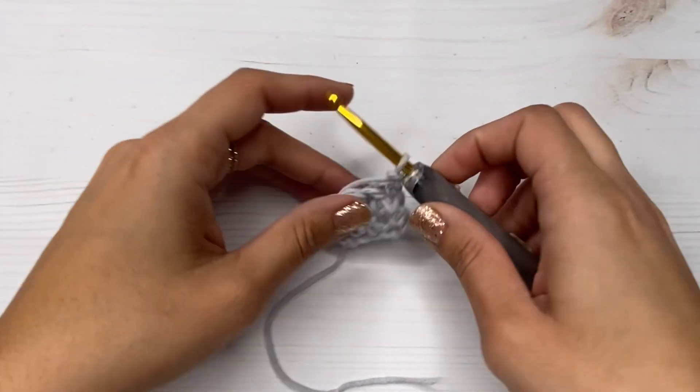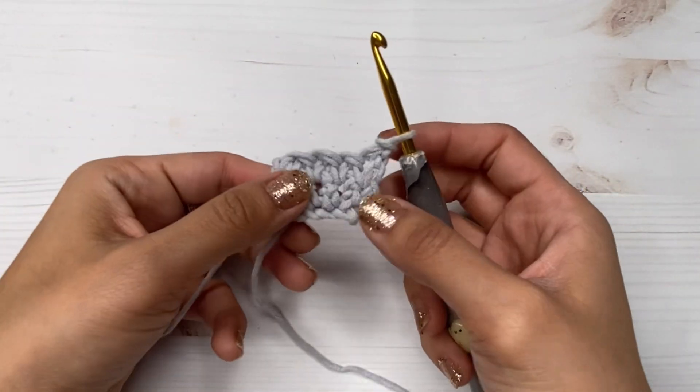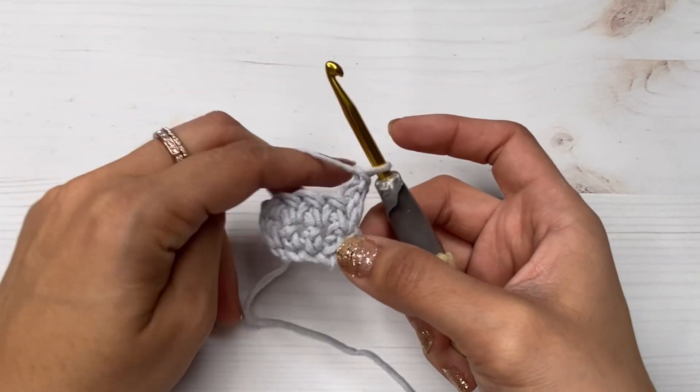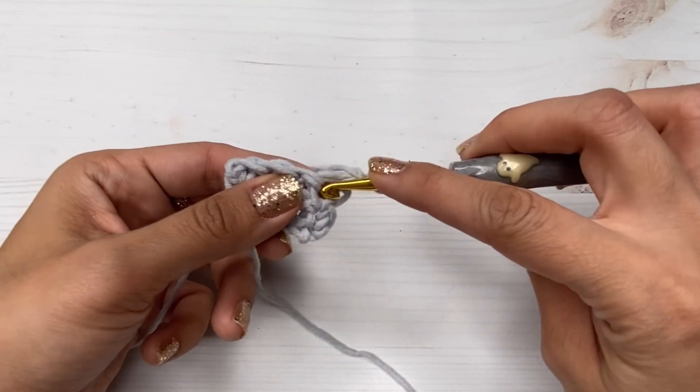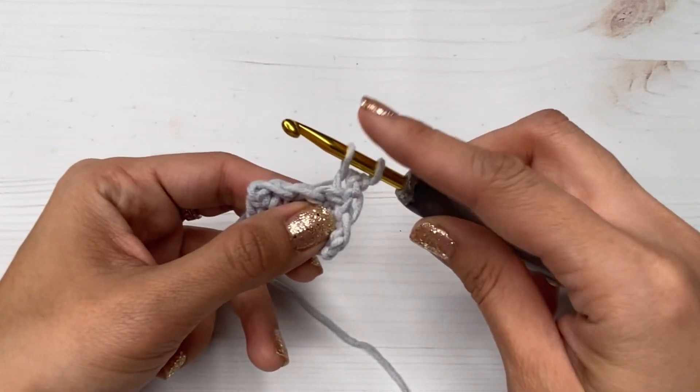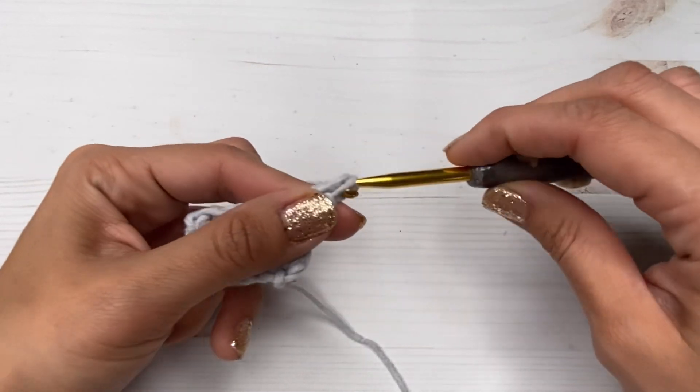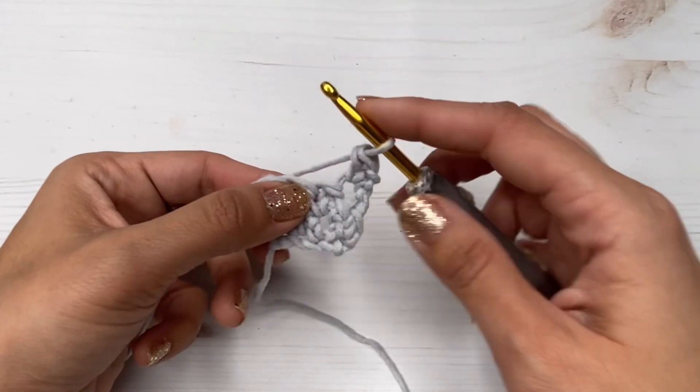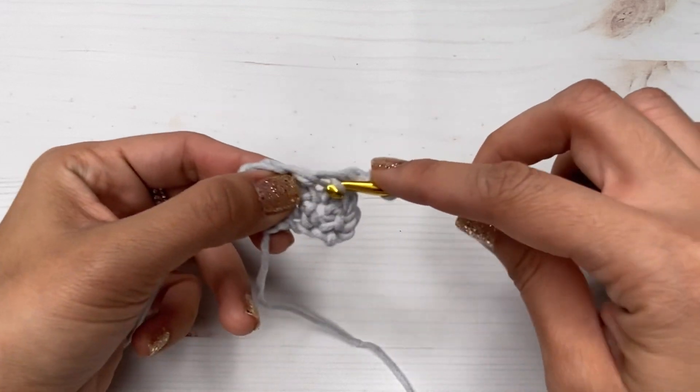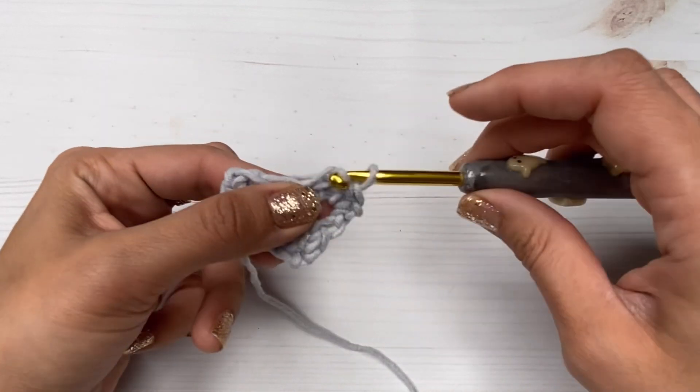And I also forgot to mention you guys that that chain one does not count as a stitch. Okay, so you should always have four stitches across, so just remember the chain one you do at the beginning does not count as a stitch.